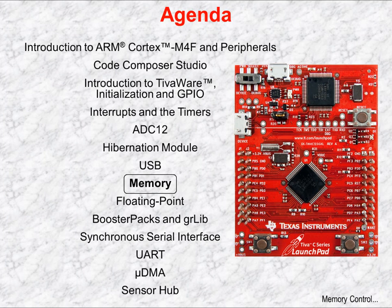The TM4C123GH6PM has four different types of memory: Flash, SRAM, EEPROM, and ROM. In Chapter 8, you'll learn about the different features and capabilities of these memories.